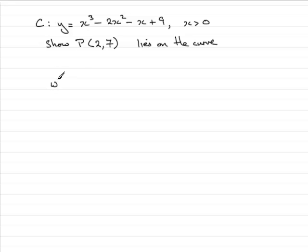So let's just do that. When x equals 2, y equals 2 cubed minus 2 times 2 squared minus 2 plus 9.